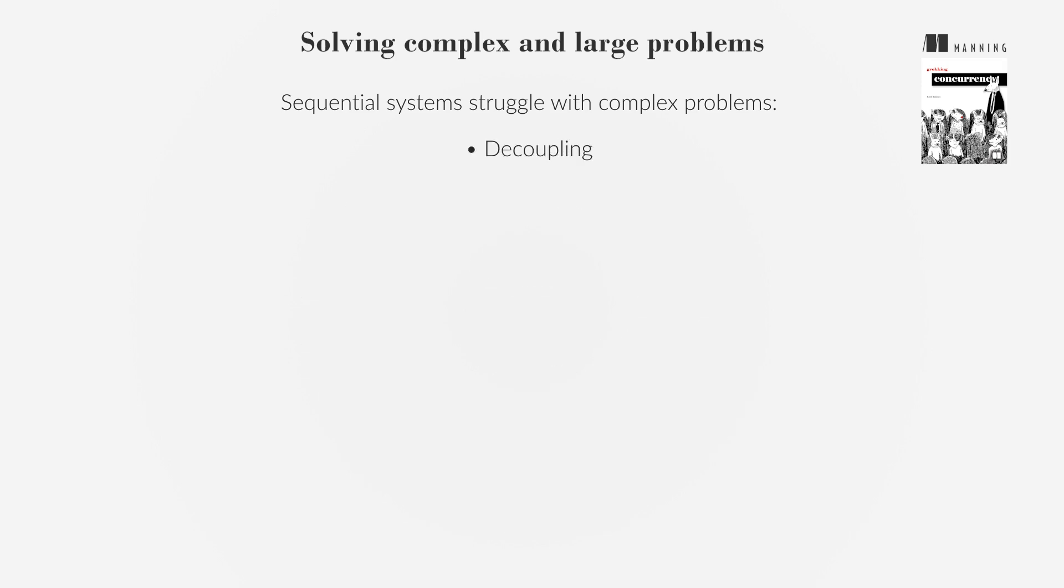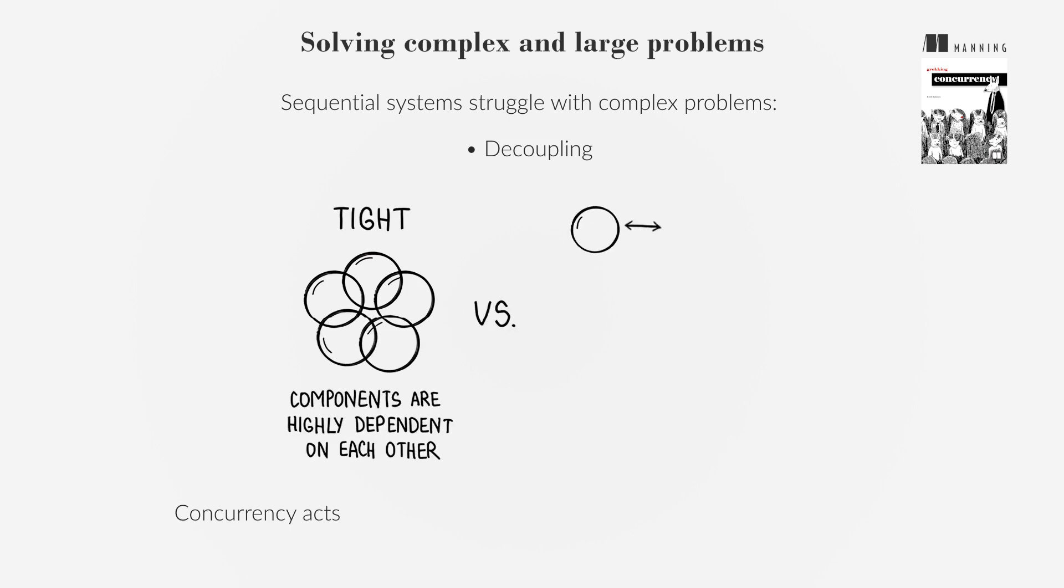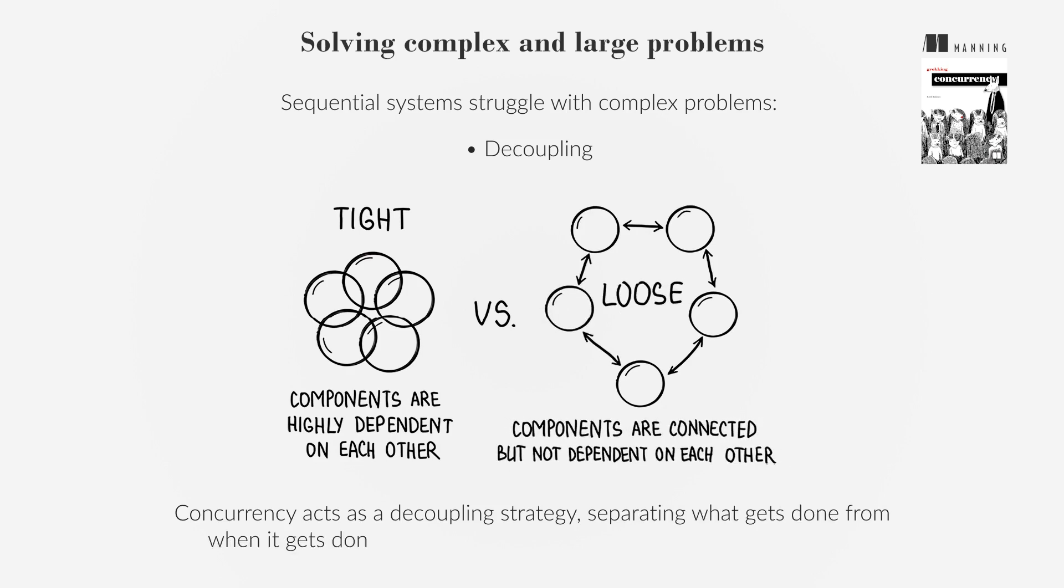Decoupling: To manage complexity, systems are divided into simpler, independent units. Concurrency acts as a decoupling strategy, separating what gets done from when it gets done, improving performance, scalability, and reliability.